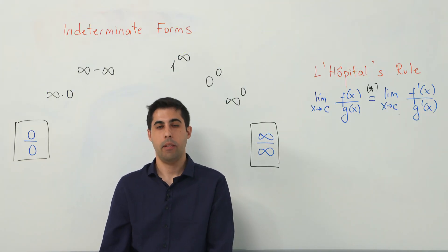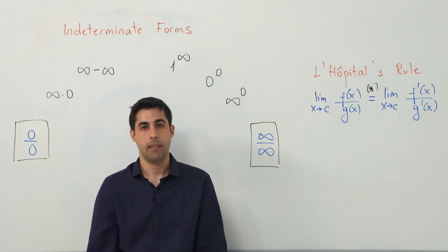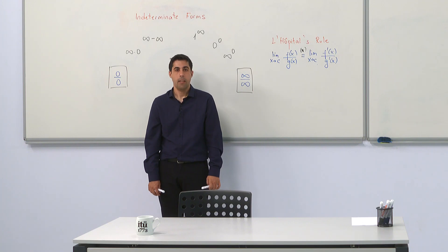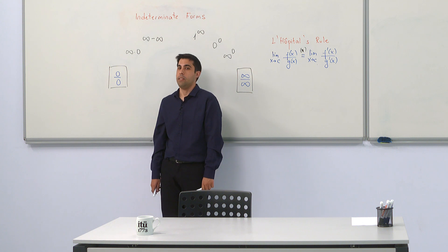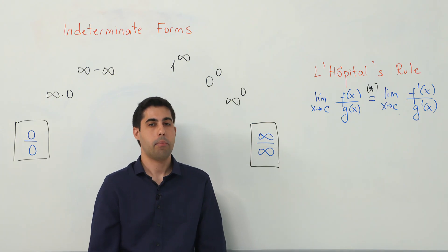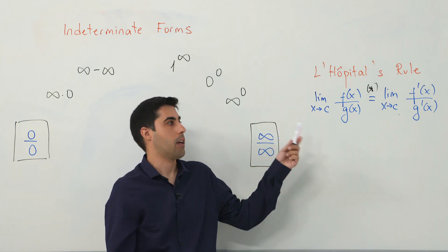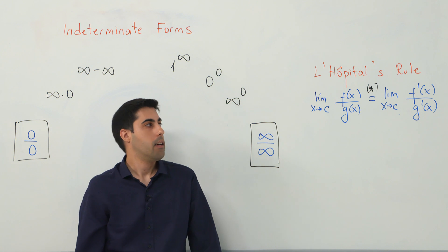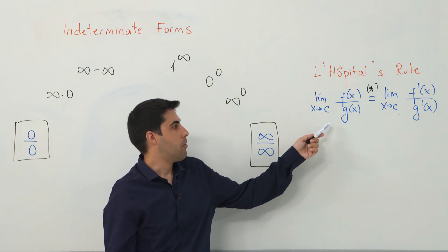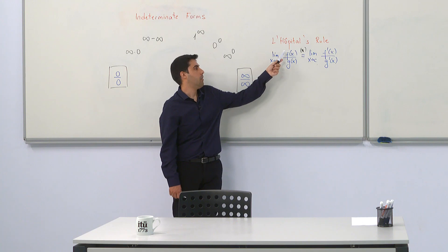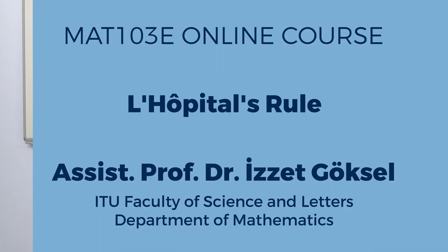Today we have seen indeterminate forms and L'Hôpital's rule when calculating limits. There are two things to remember. Firstly, we can only use L'Hôpital's rule when we have an indeterminate form — in practice, either 0 over 0 or infinity over infinity, since we need a fraction. Secondly, when applying L'Hôpital's rule, we must be careful to take the derivative of the numerator and denominator separately, not the derivative of the quotient. Thank you very much.